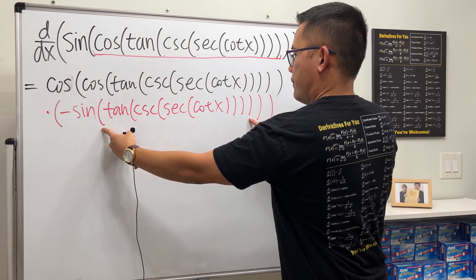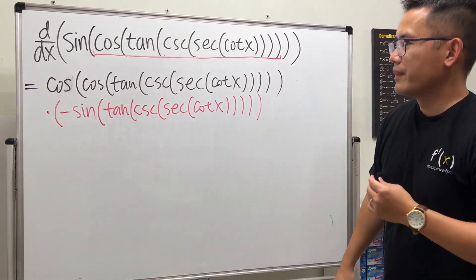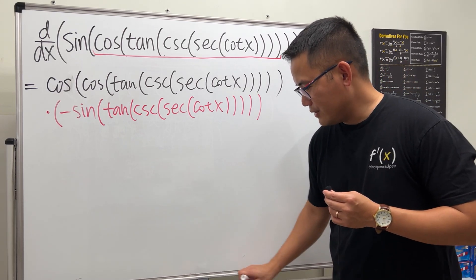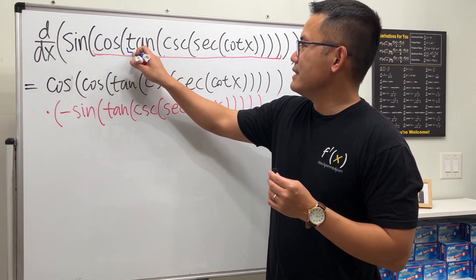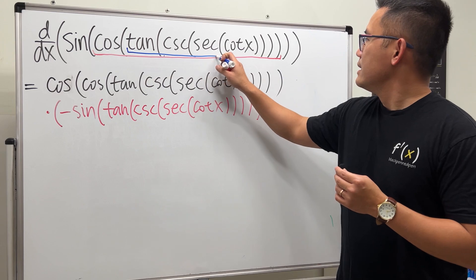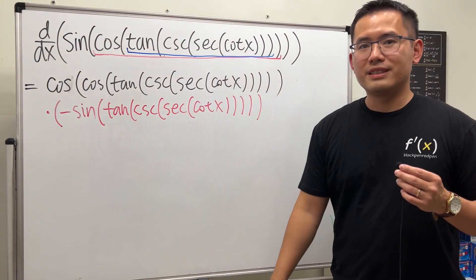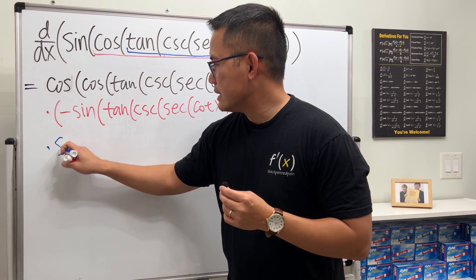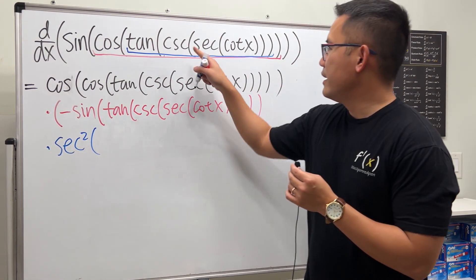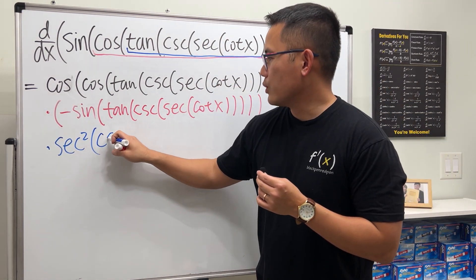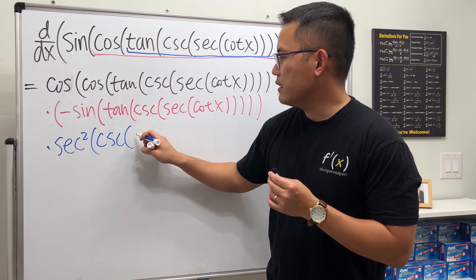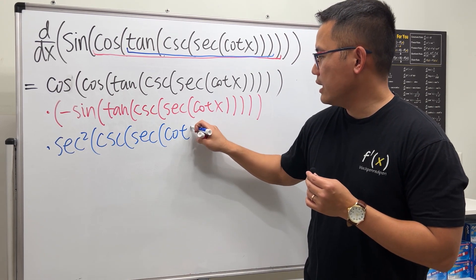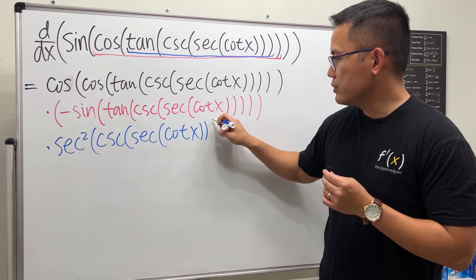Continuing, we differentiate the next layer. The derivative of tangent is secant squared, so we multiply by secant squared of the inside, which is cosecant of secant of cotangent of x.